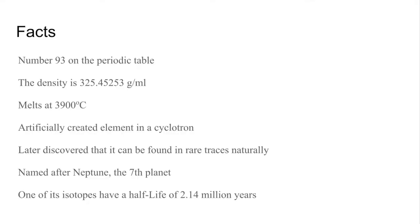Neptunium is number 93 on the periodic table. Its density is 325.45 grams per milliliter. It melts at 3900 degrees Celsius, and it was an artificially created element. It was later discovered that it can be found in rare traces naturally.